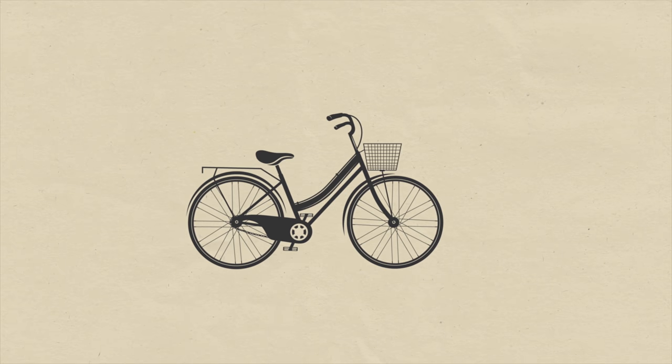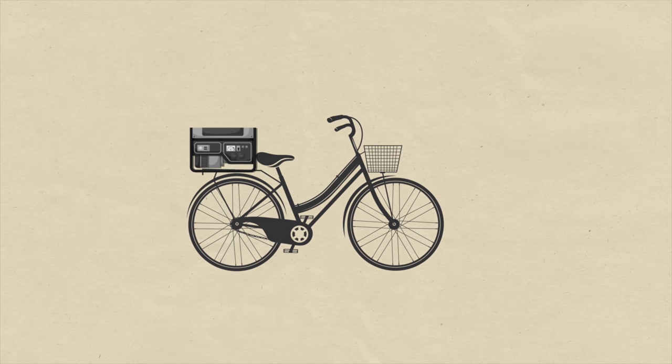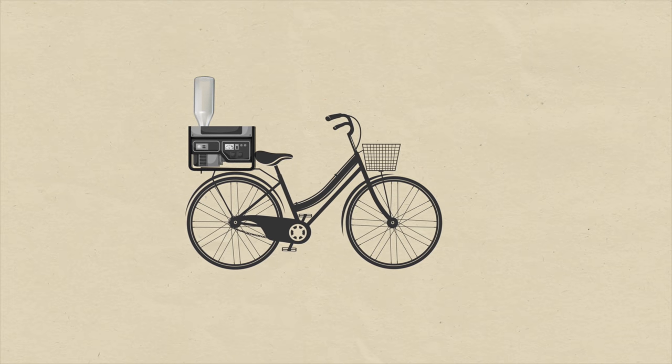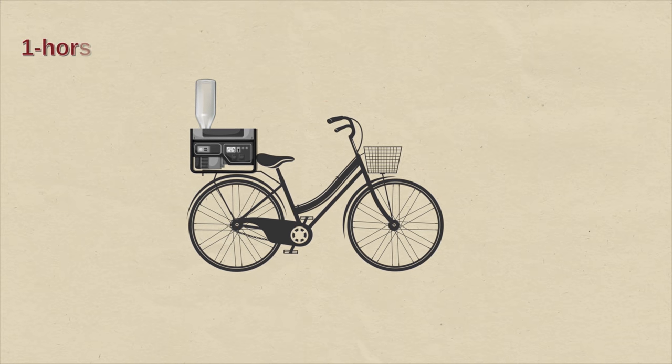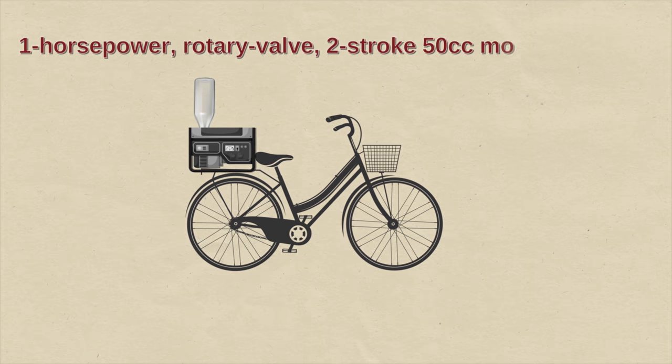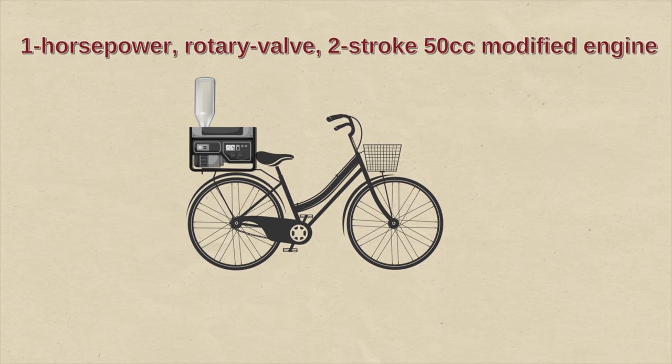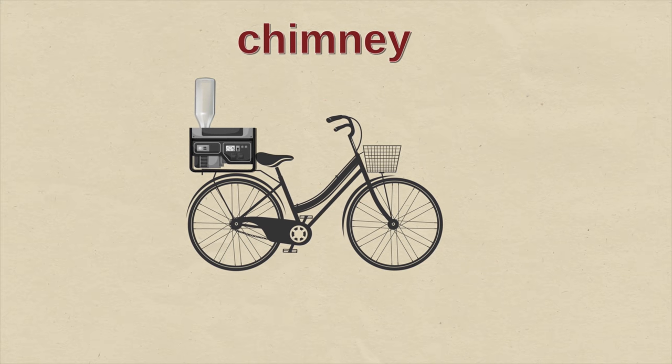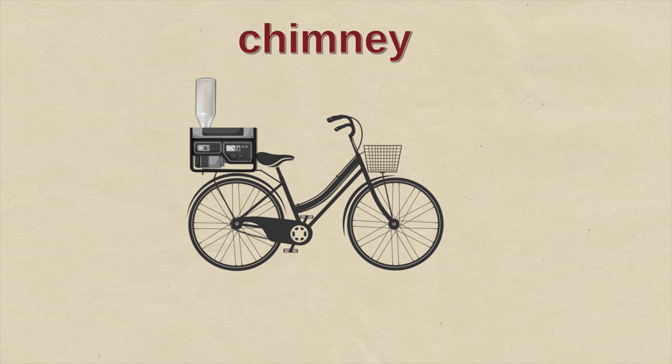He gets working on the prototype. He straps the generator engine to the bike and uses a hot water bottle he finds in his house as a fuel tank. This one horsepower rotary valve two stroke 50cc modified engine is the beginning of the Honda Motor Company. It quickly gets nicknamed Chimney thanks to its tall single cylinder and the fact that it also makes a lot of smoke.